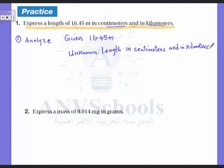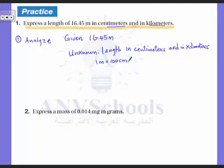The equality that relates meter to centimeter is: one meter equals 100 centimeters. So this is the equality here.